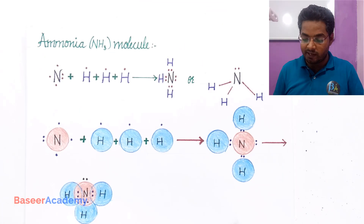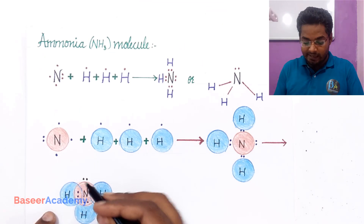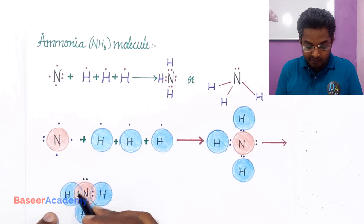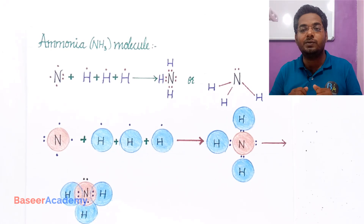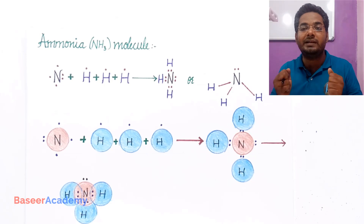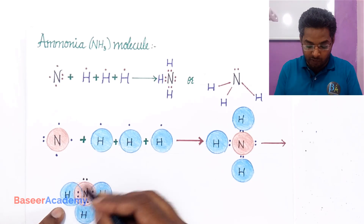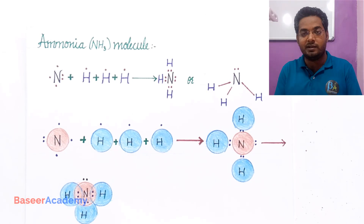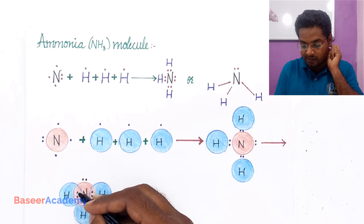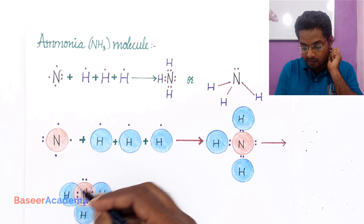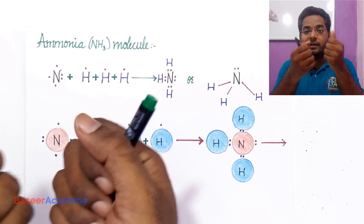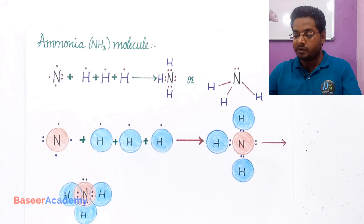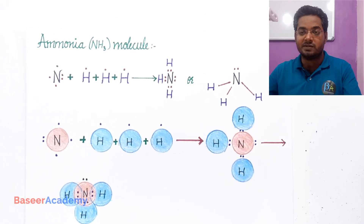Valence shell electron pair repulsion theory considers the lone pair electrons and the bond pair electrons as electron charge clouds that repel each other. Both are negatively charged particles — both are electrons. The electrons in the bond pair and the lone pair repel each other and go as far apart as possible so that the repulsion between them is minimum.